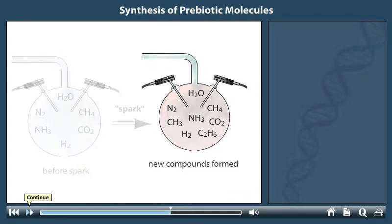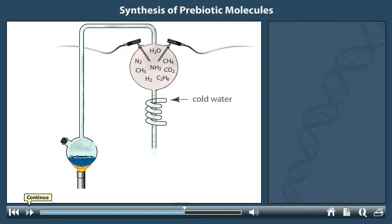After applying the electrical sparks, Miller and Urey condensed the atmospheric gases into artificial rain by passing them through cold water. This rain, which would contain any new compounds present in the atmosphere, washed back into the artificial ocean. Miller and Urey then collected samples of the water produced to test it for the presence of new compounds.